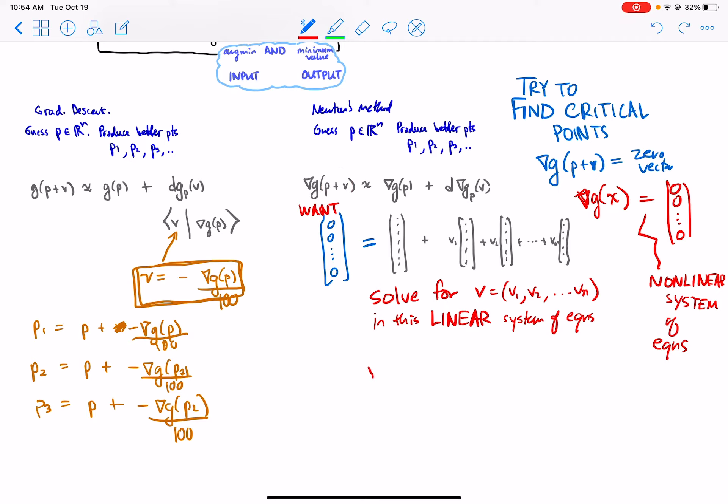And then we'll take P1 to be P plus V. If a linear approximation were perfect, we would be done. P1 would be the answer. It would be a critical point. The gradient is zero, so that could possibly be the argument.